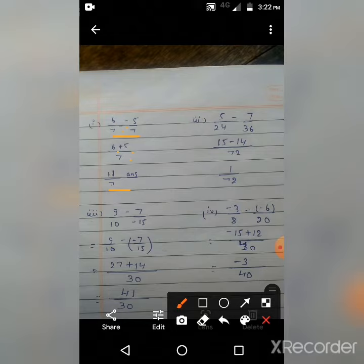Second question: 5/24 minus 7/36. These two, LCM first. We have 24 and 36, so 72 LCM. Then 72 to 24 divide and how much we have to do, 5 into. The same process this side we have to do.